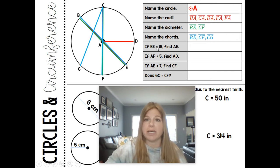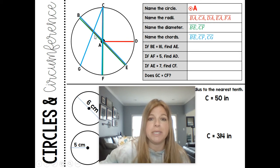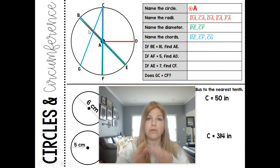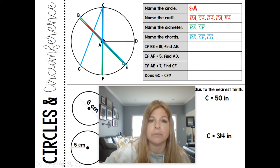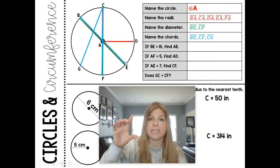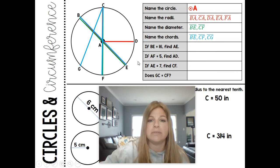Now, doing some really quick calculations. It says if BE is 16, so BE is a diameter, find AE. So if BE is 16, the full diameter is 16, I'm asked to find AE, which is simply the radius. The relationship from the diameter to the radius is that you divide by 2. So 16 divided by 2 is 8. So if the full length is 16, then this little length is just 8. It's half of it.